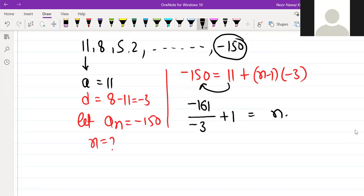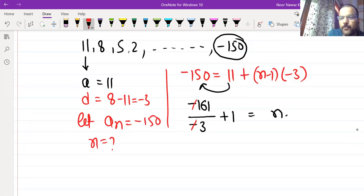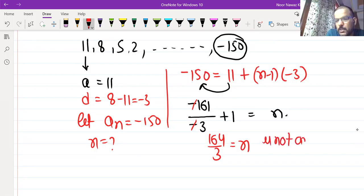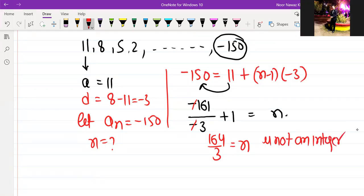So, now, what do you do? Minus minus, cancel. Now, 161, 3 will not divide. So, 3 will be 3. So, 161, 3 will add. So, 164 by 3 is equal to N. It is not an integer. So, if it is not an integer, then it is not possible. It is not a term.